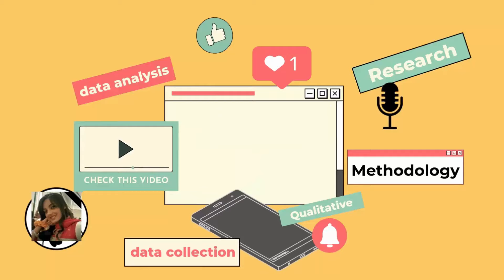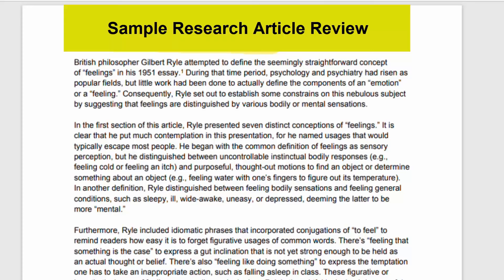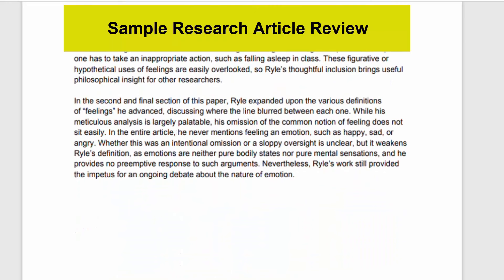Hi, I'm Ayesha, and you are watching Educational Hub. An article review format allows scholars or students to analyze and evaluate the work of other experts in a given field outside of the education system. Experts often review the work of their peers for clarity, originality, and contribution to the discipline of study.